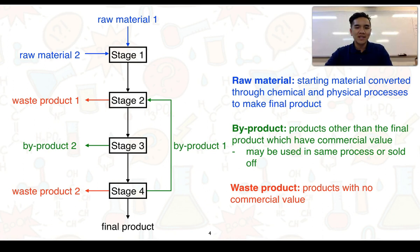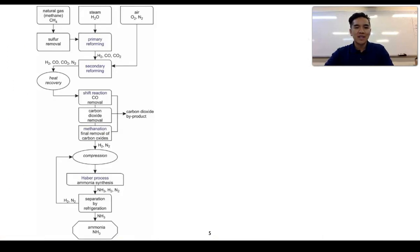All of this is then designed to essentially form our final product. We've got an example here of a flowchart, and this is for what we call the Haber process, which is involved in the manufacturing of ammonia. We know ammonia can be used for things such as fertilisers and explosives.